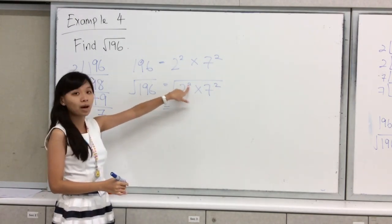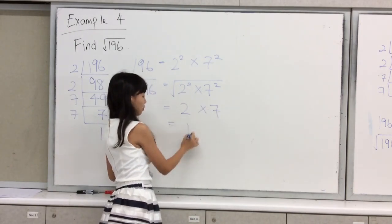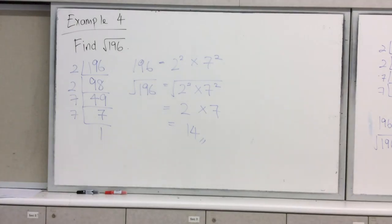So 2 squared, divide the power by 2, I get 2. I get 7. So my answer will be 4.